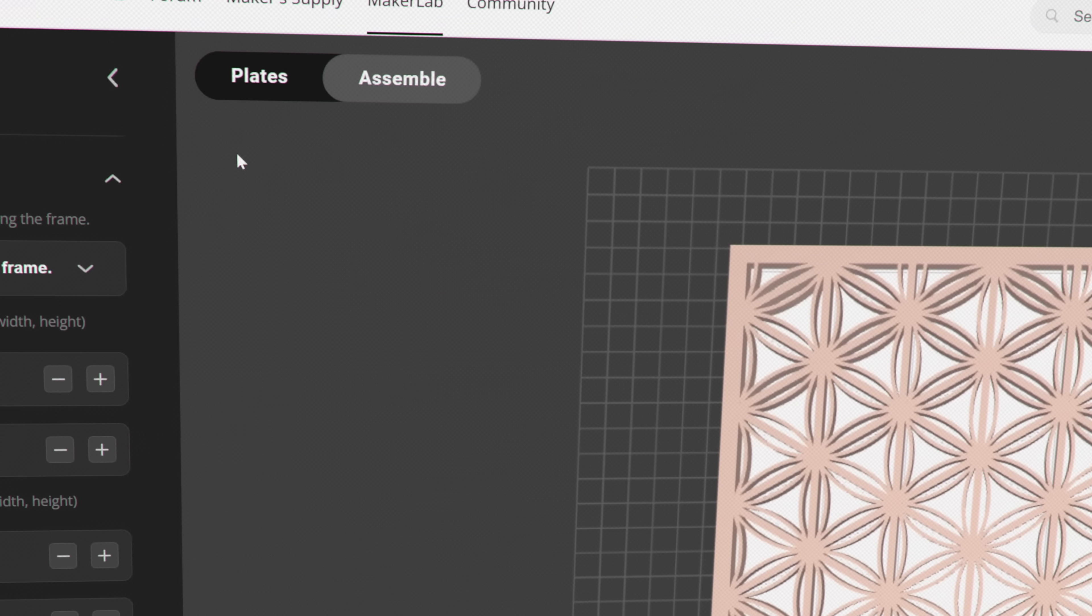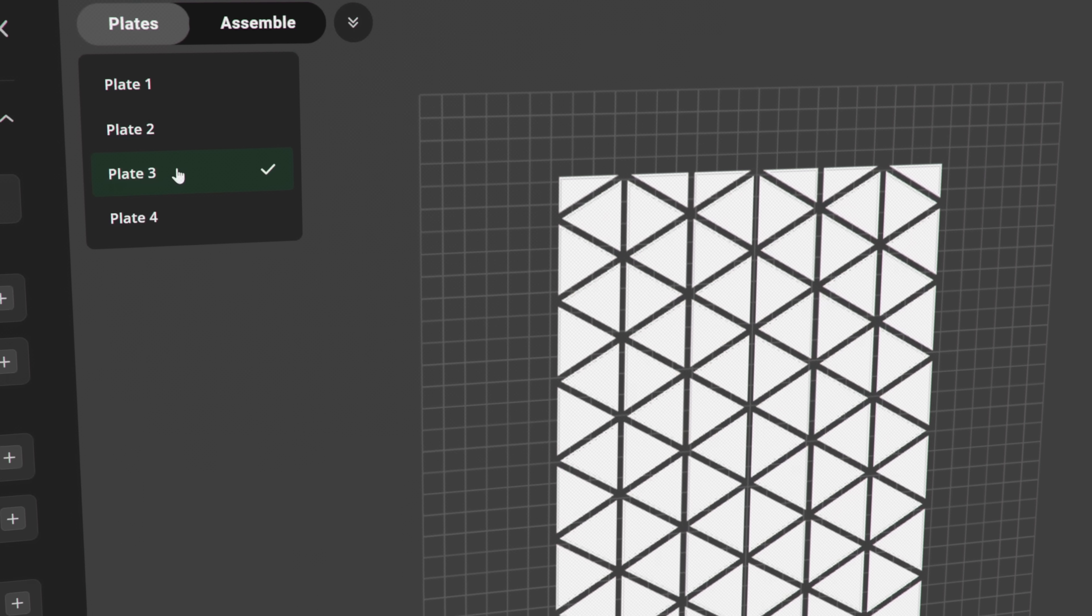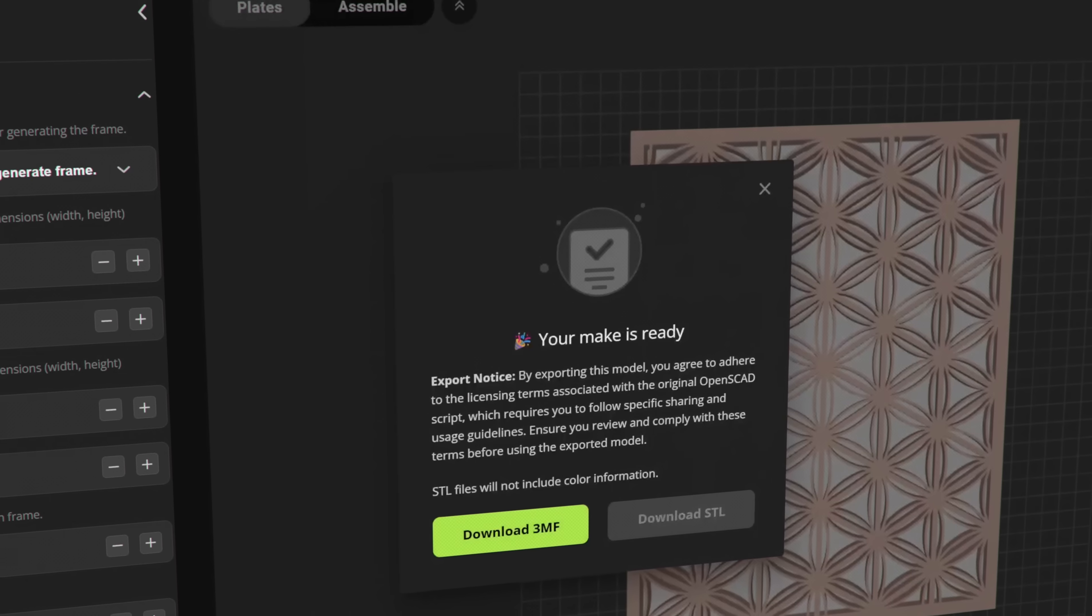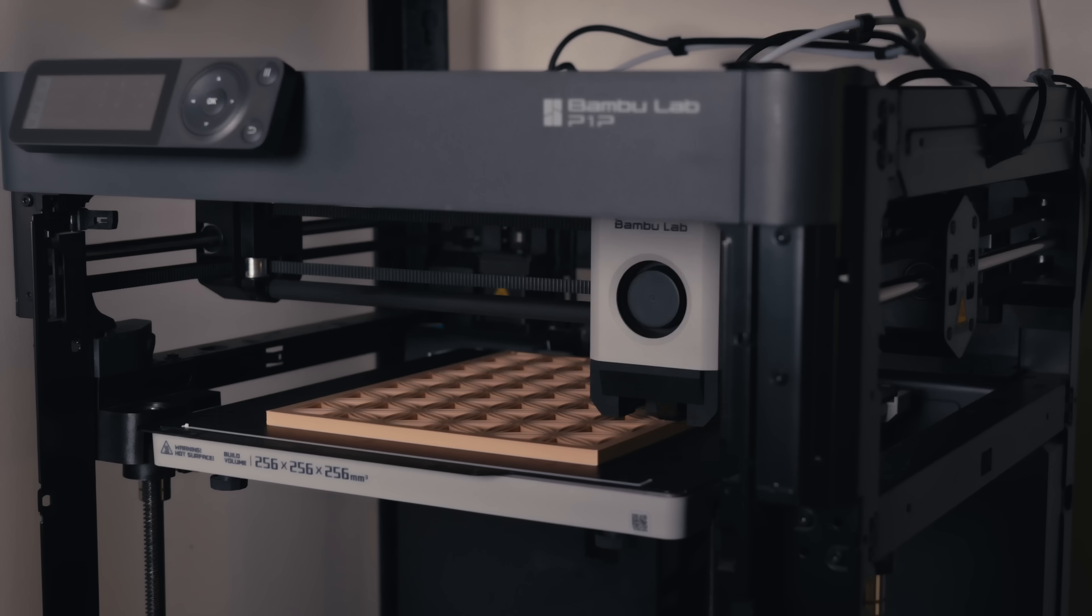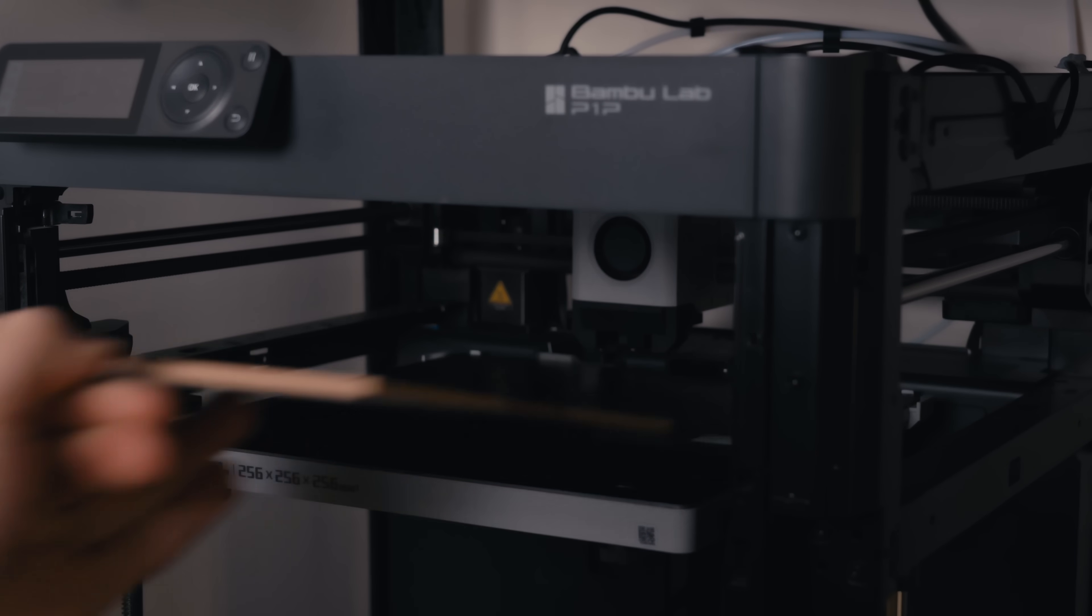Once you've modified the panel to your liking, you can print the components individually, which will let you swap out pieces in the future, or print your panel as a single component, which I would recommend for panels with small pieces. The link for the model is available in the description, so you can make your very own miniature panel today.